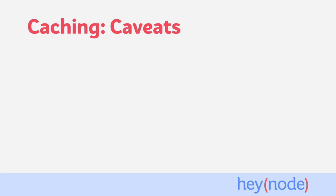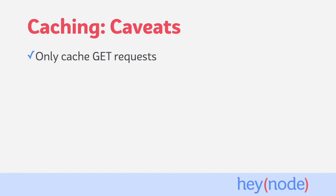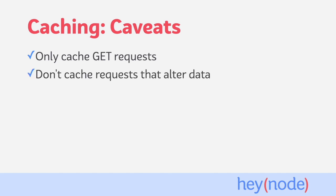Caching can be powerful, but it's also a non-trivial topic, so it's important to think about what to cache. First, it's recommended to only cache GET requests. GET requests typically only retrieve data and are safe to cache. You don't want to cache requests that alter data, like POST, DELETE, and PUT requests typically do. Caching operations that alter data prevents the intended operation from actually occurring.